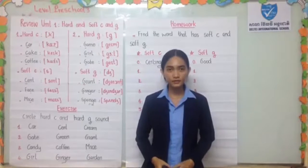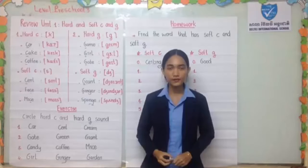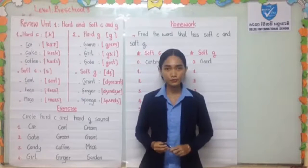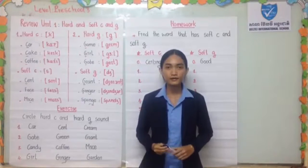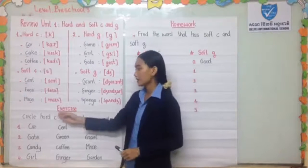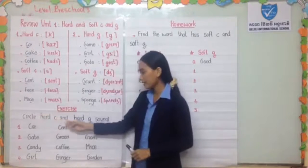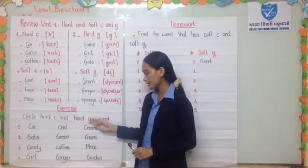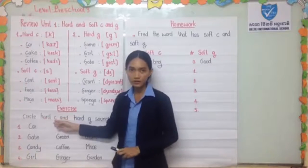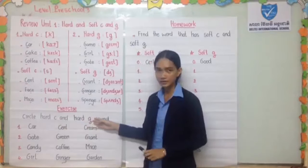So after you learn your lesson, I will have one exercise for you to do. So now let's go together. The exercise covers hard C and hard G sounds. Hard C makes the 'K' sound, and hard G makes the 'G' sound.